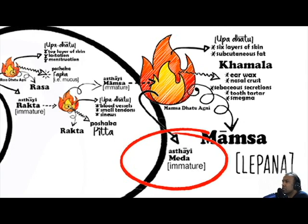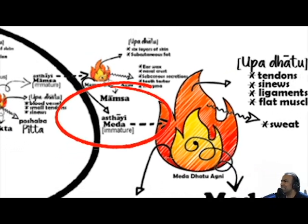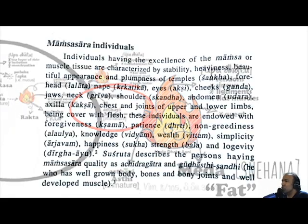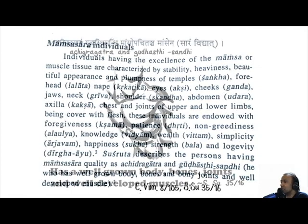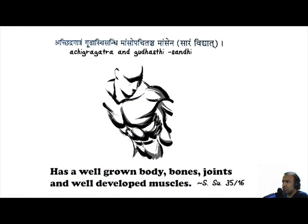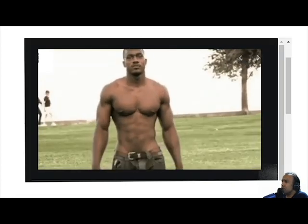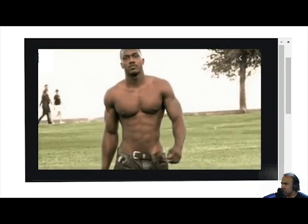Another byproduct of Mumsadatu are the precursors required for the formation of the succeeding Dhatu — Medadhatu, or adipose fat tissue. Those individuals having excellence of Mumsadatu are described as having a stable and beautiful appearance. Sushruta describes Mumsasara — those having well-developed muscles — and there is even a psychological component, such that optimal Mumsadatu brings about confidence, courage, and determination.